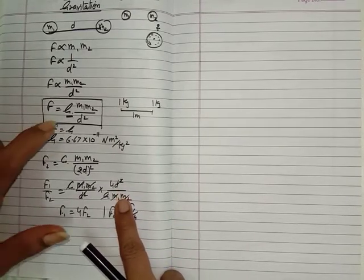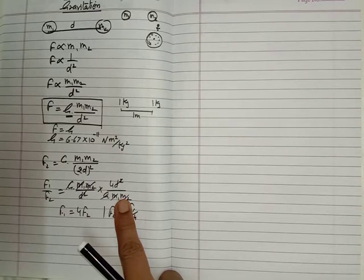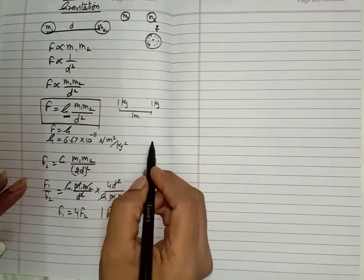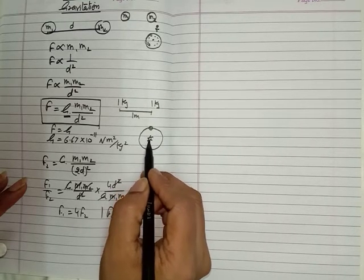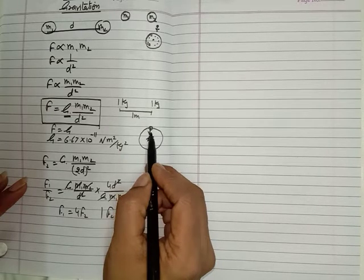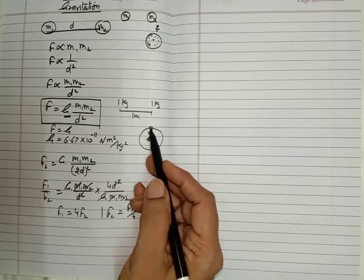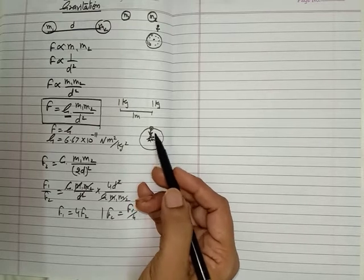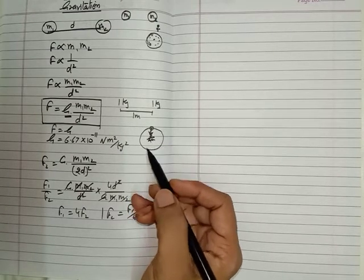This is the formula we used to find the attraction force between two objects. We have also learnt the centripetal force. Suppose something is revolving around another object - suppose this is the earth and it is revolving around the sun. There should be some force which makes it revolve around the sun, and this force is called the centripetal force. The centripetal force acts towards the centre of the circle, and the force of attraction between the earth and the sun makes the planet able to revolve around the sun.